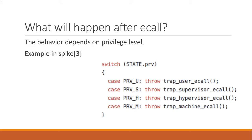Here's an example I found from Spike. When you execute an ECALL, it will check the privilege level. And depending on the privilege level, it will throw a different trap — user ECALL, supervisor ECALL. Inside the trap, you have to implement what you need to do, and that part comes from the privilege level spec. I hope later when I have a tutorial about the privilege spec, I will talk more about that part.